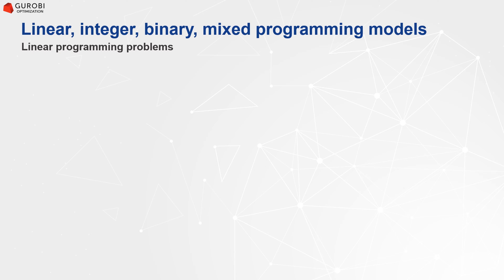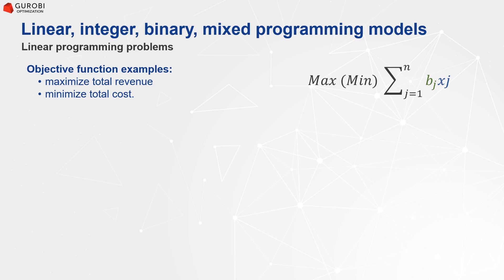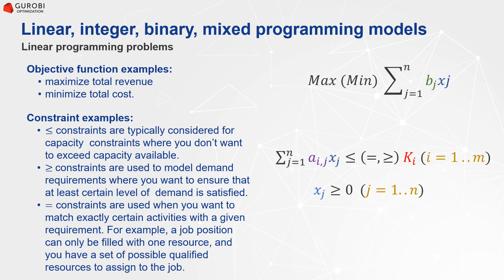Now let's discuss the general formulations of linear programming and mixed-integral programming problems. One component is an objective to optimize — either maximizing (e.g., total revenue) or minimizing (e.g., total cost). For constraints, we can have less-than-or-equal constraints, typically used for capacity constraints as in the furniture problem, where we cannot exceed the capacity of each resource.